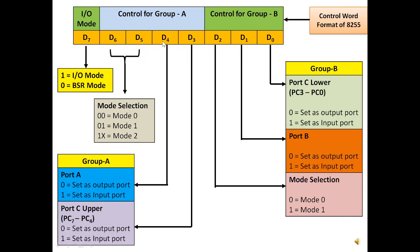Moving on to Group A: D3 is reserved for controlling Port C upper — similarly, 0 means output and 1 means input. Bit D4 is for Port A, again 0 means output and 1 means input. D5 and D6 are used for selection of the Group A mode. If it is 00, Group A works in mode 0; if it is 01, Group A works in mode 1; and if it is 1x (x means don't care), mode 2 is selected — whether the input is 10 or 11, mode 2 will be selected.